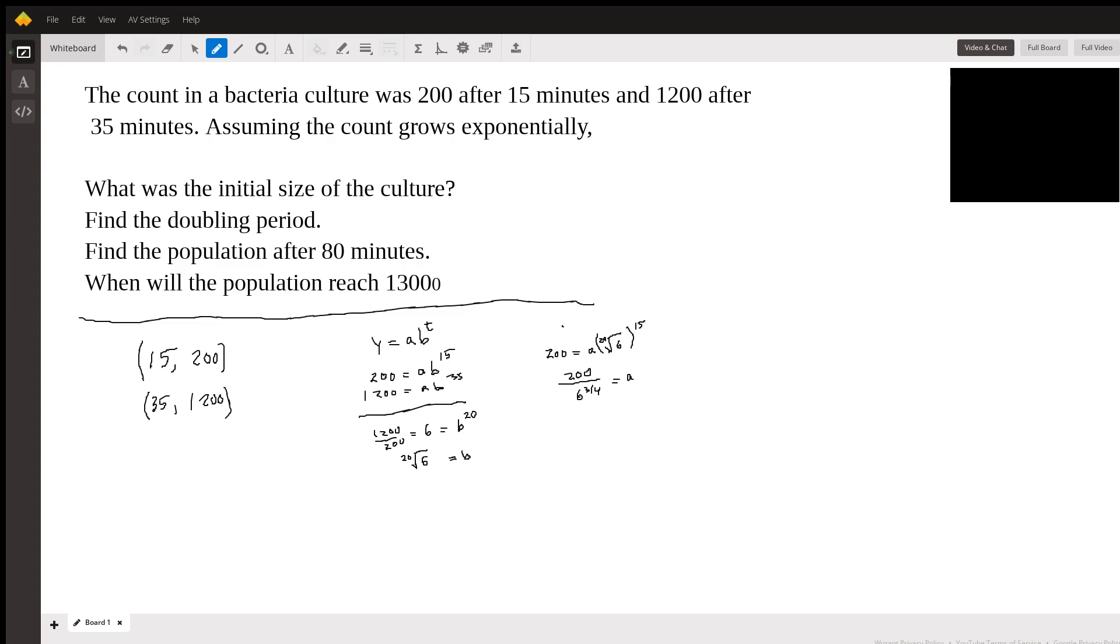Find 200 divided by 6 raised to the 0.75. And this is giving me, for A, it's giving me 52. You can't have a partial bacteria, so I'm just going to ignore what's to the right of the decimal point here. So now our equation is Y is equal to 52 times the 20th root of 6 raised to the T power. So that's our formula.